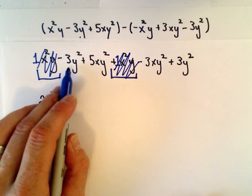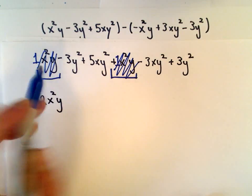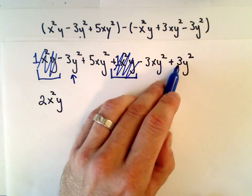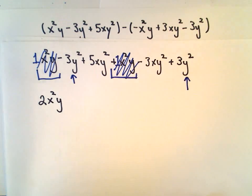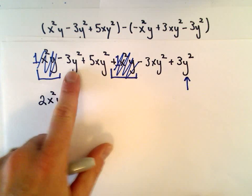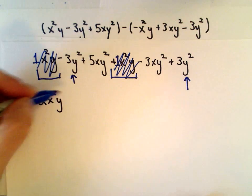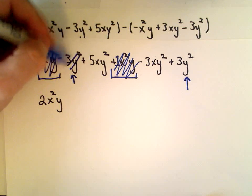Okay, so next I've got this negative 3y squared, and the only other place I see a term involving y squared is the very last one. That's negative 3y squared plus 3y squared - those are just going to give us 0y squared or 0, so I'm not going to write it down. Those will just cancel out.